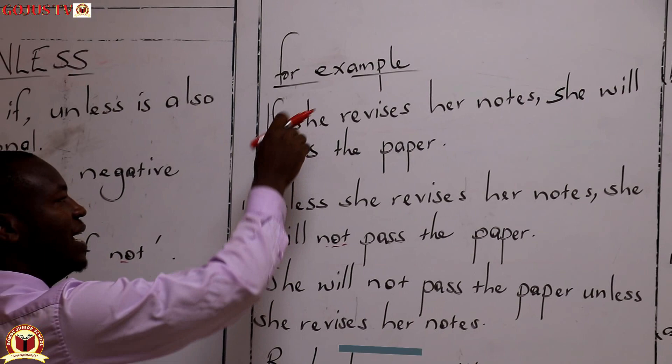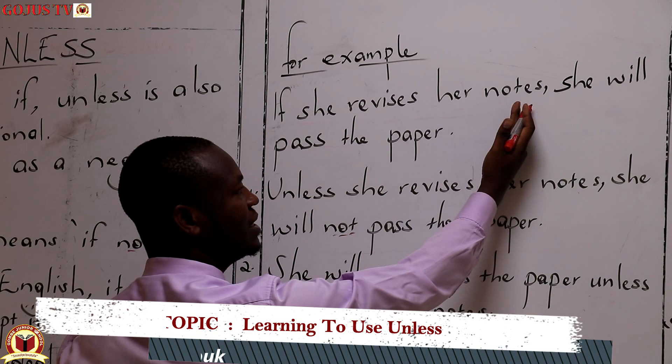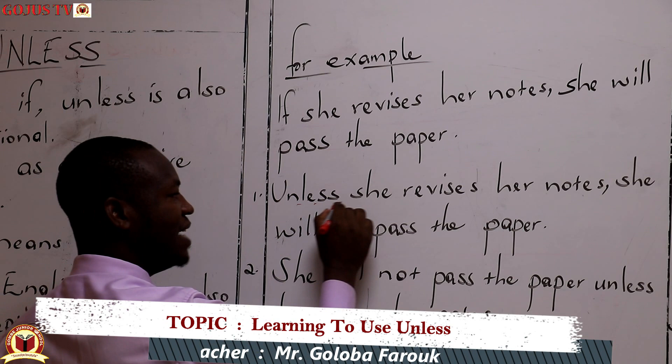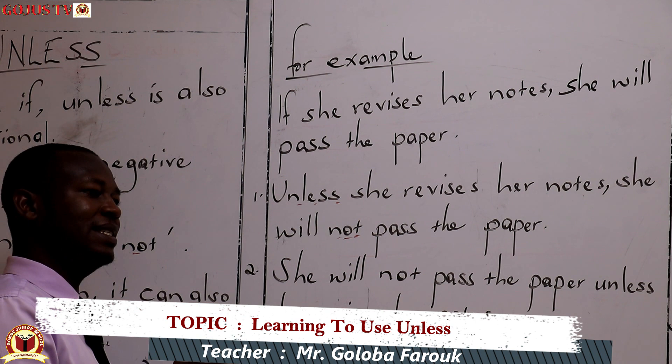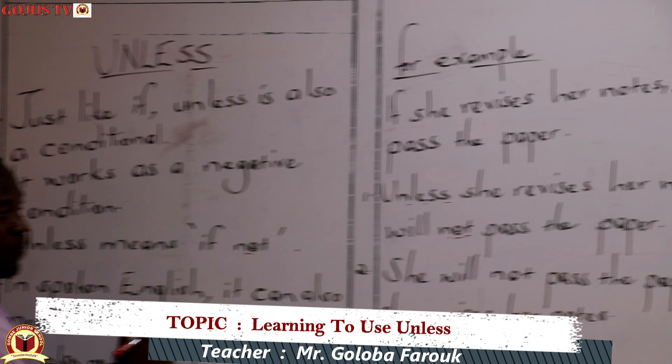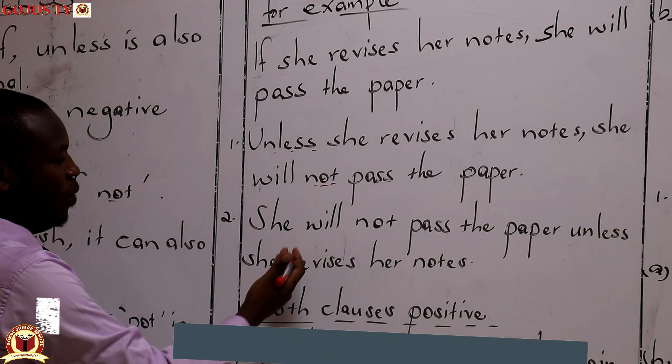If you use 'except if', it becomes: 'Except if she revises her notes' — you've already put a negative condition. 'Except if she revises her notes. Unless she revises her notes, she will not pass the paper.' So for all of us who like making sentences using a spoken mode, sounding the sentence through to see whether it makes sense — this meaning of 'except if' will help you. 'Except if' is already a representation of 'unless'.